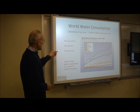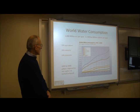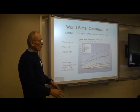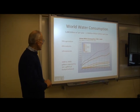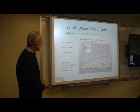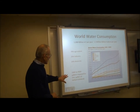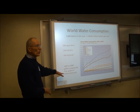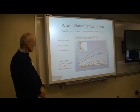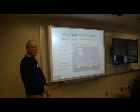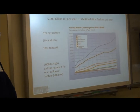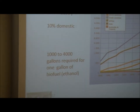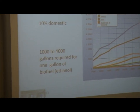20% is used in industry, and only 10% for domestic uses — for washing, for flushing, that sort of thing. In order to produce a gallon of ethanol biofuel, it requires 1,000 to 4,000 gallons of water.